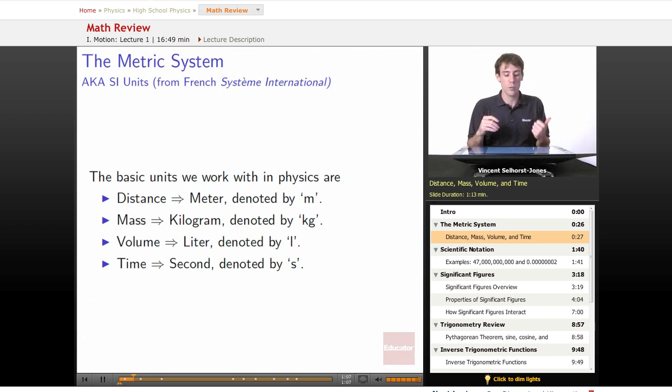The basic units we work with in physics are: distance, the meter, denoted by a small m; mass, the kilogram, denoted by kg (it's the kilogram, not the gram, that we consider our basic unit of mass); volume, the liter, denoted by a small l or sometimes a cursive l if it might get confused as a one; and finally, time, the second, denoted by s.